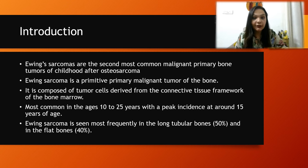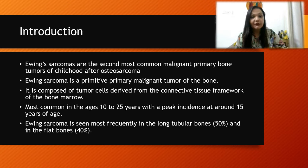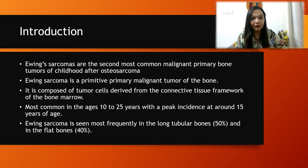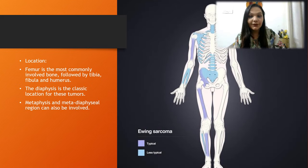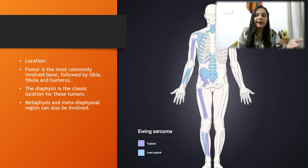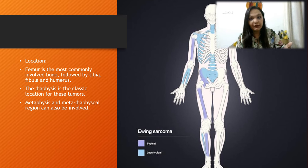The typically involved age group is from 10 to 25 years of age, with peak incidence at around 15 years. This pictorial representation shows the typically involved bones in purple, followed by the light blue coloured bones that are the less typical sites of involvement.